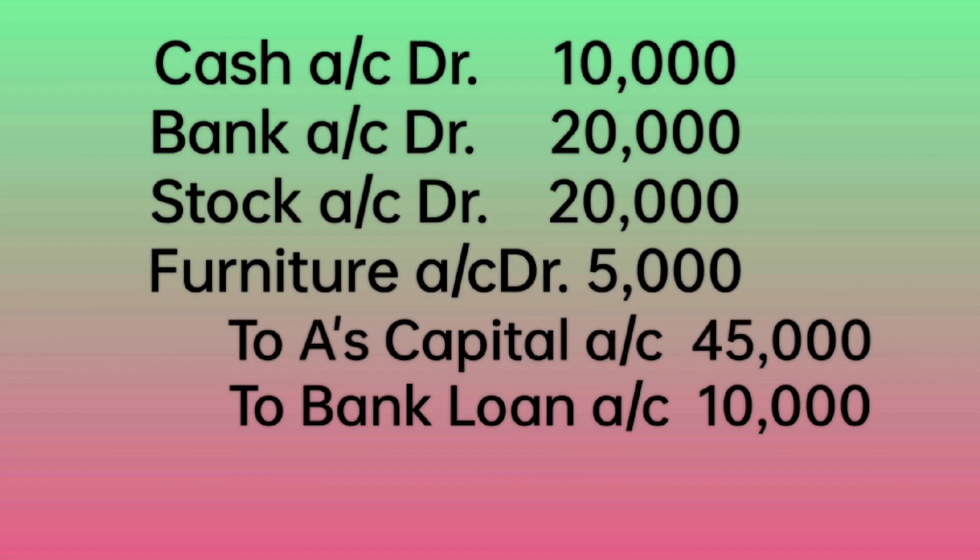Then, while writing the opening entry, all the assets are to be debited and capital and liabilities are to be credited. Therefore, the journal entry will be: Cash account Dr. 10,000; Bank account Dr. 20,000; Stock account Dr. 20,000; Furniture account Dr. 5,000; to A's capital 45,000; to bank loan 10,000.